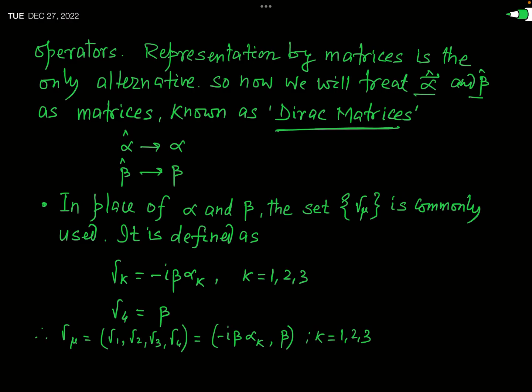Whenever alpha and beta appear, they should be understood as Dirac matrices. In matrix notation we drop the operator hat symbol, writing simply alpha instead of alpha-hat, alpha_k instead of alpha_k-hat, and beta instead of beta-hat. For convenience, we introduce a set γμ in place of alpha and beta. This set γμ is analogous to a four-vector, where μ = 1, 2, 3, 4.